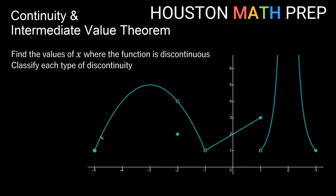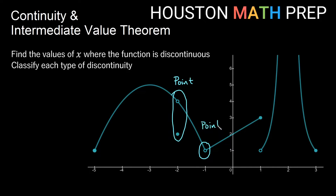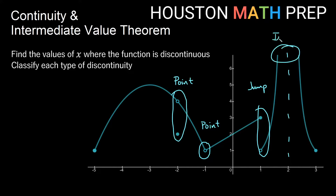Let's go ahead and work an example. I've drawn the graph of a function. We want to find the values of x where the function is discontinuous and classify each type. Starting on the left side, I continue on the graph until I get to a hole — that is a point discontinuity. Then I have another hole, so that's another discontinuity at x equals negative one — that's a point as well. As we cross the y-axis, we're fine until we get to positive one, where we have a jump discontinuity. And at positive two, it looks like we have a vertical asymptote — an infinite discontinuity.